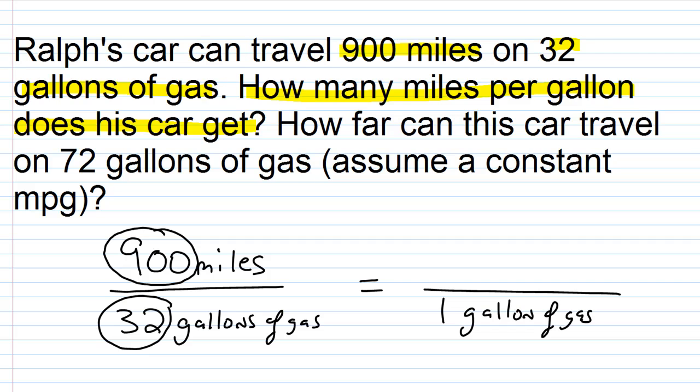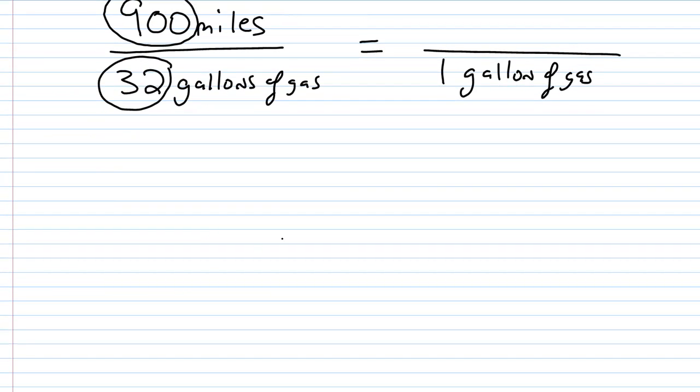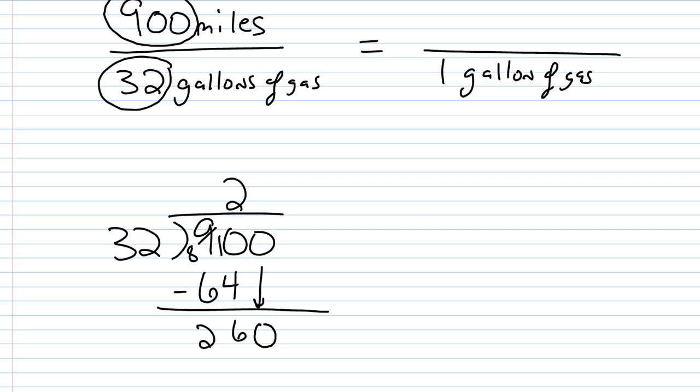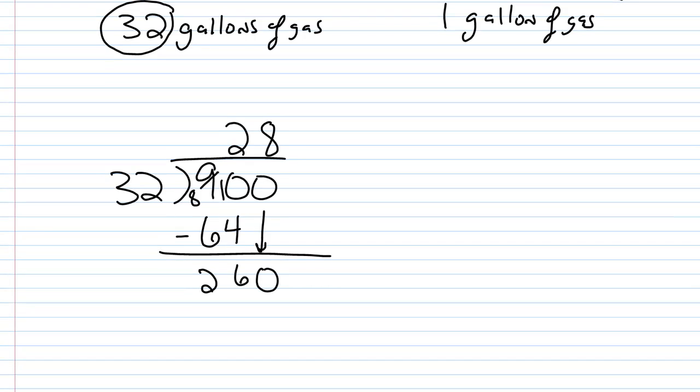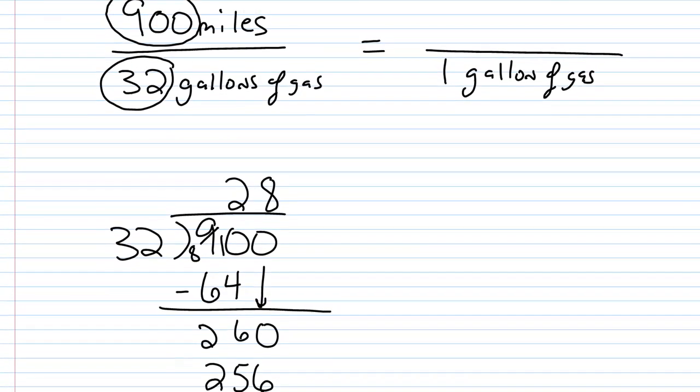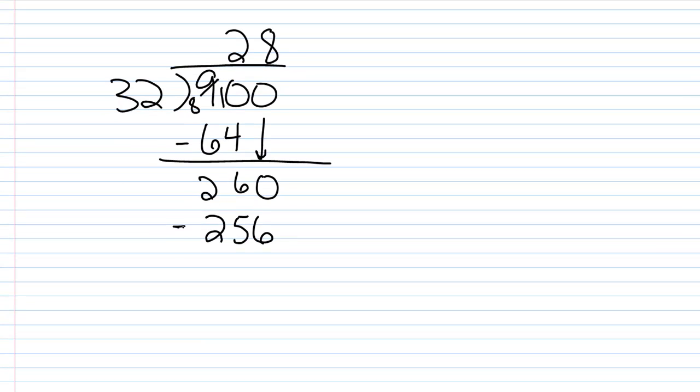So we're going to go ahead and divide 900 by 32. 32 goes into 90 twice. 2 times 32 is 64. Bring down the 0 here. 32 will go into 260 eight times. 8 times 32 would be 256. Let's subtract here. We're going to get 4.